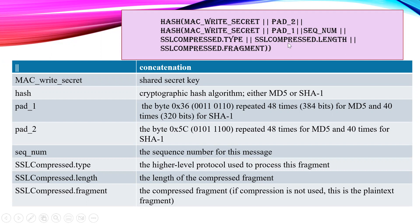SSL compress dot type and you will have a length and number of fragments. The length, type, and fragment determine different aspects of the algorithm. Hash is a cryptographic algorithm — MD5 (message digest 5) or SHA1. Pad1 and pad2 are bytes which are repeated a number of times so that they satisfy the basic requirements of the algorithm.